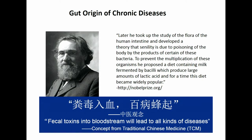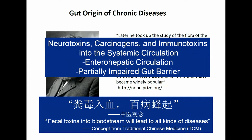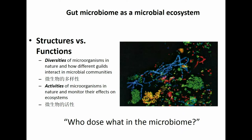Chinese medicine also believes that fecal toxicity is driving all kinds of diseases. Now we know neurotoxins, carcinogens, and immunotoxins — all kinds of toxins have been identified and studied in various systems — and have been shown that they can get into our bloodstream either through the enterohepatic circulation or through a partially impaired gut barrier. From a microbial ecological perspective, we know gut microbiota is just a microbial ecosystem, and the most important question I would like to answer is: who does what in the microbiome.